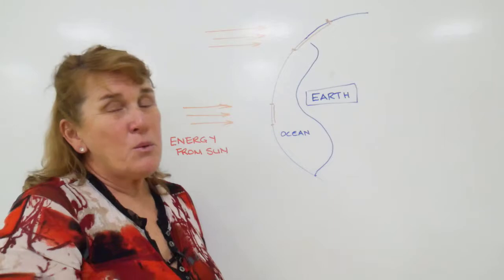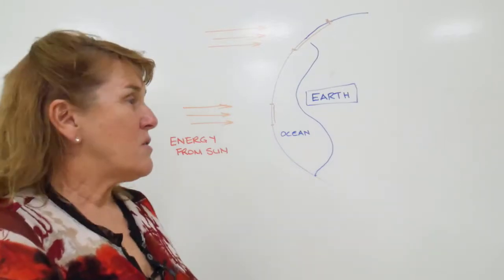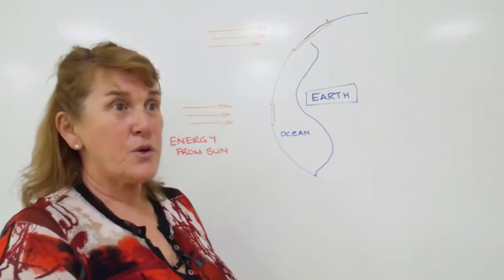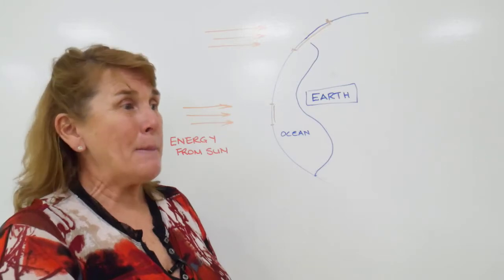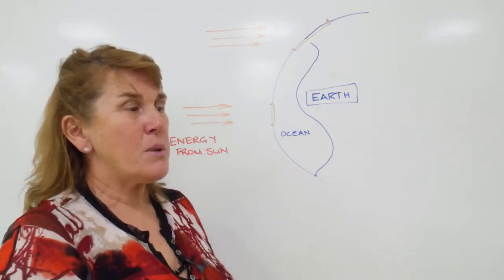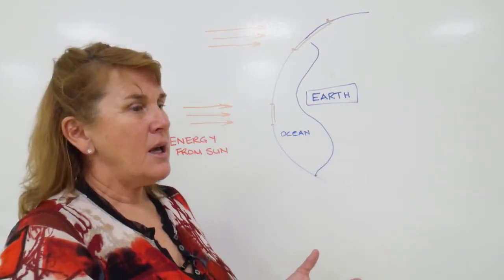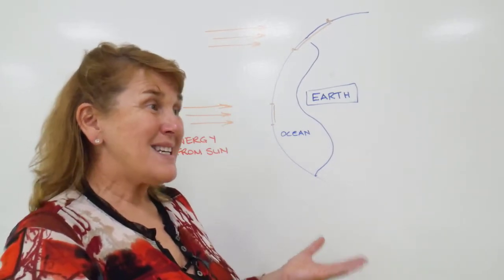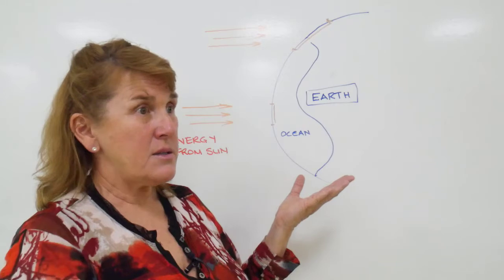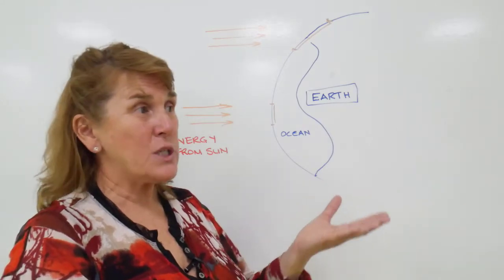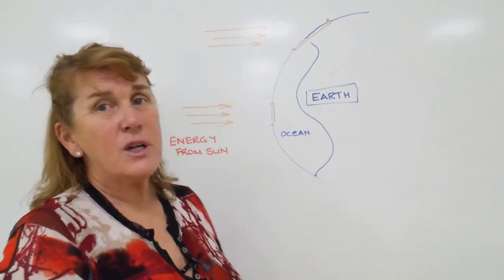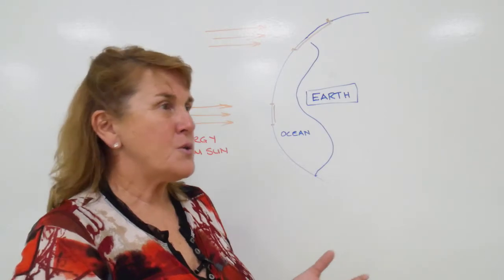The third way, which probably warrants a whole presentation on its own, is the process called photosynthesis. This is where plants, a component of the biosphere, can harness light energy from the Sun and convert it. They basically take CO2 from the atmosphere plus water and in the presence of light energy generate glucose, which we can call food if you like.